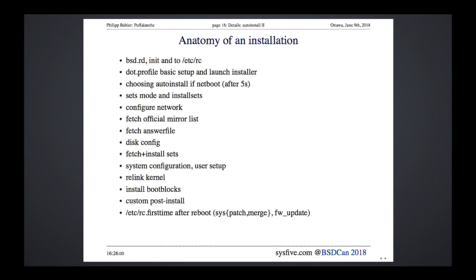After running through the install: the RAM disk fires up init, rc, launches a shell, reads .profile, detects PXE boot, enters auto-install mode after five seconds, re-issues a DHCP request, fetches the answer file, sets up disks, fetches the base tarballs (base63.tgz etc.), runs system configuration including time zone and user setup, re-links the kernel for KARL, installs boot blocks, and runs the custom post-installer. It fills /etc/rc.firsttime — which on first boot runs syspatch, sysmerge, and firmware updates — then unlinks that file.